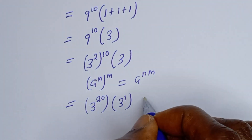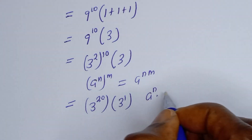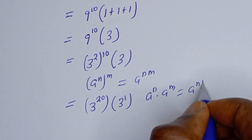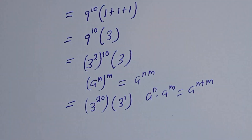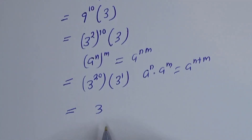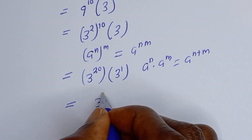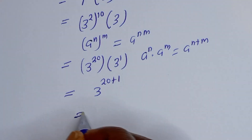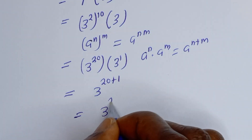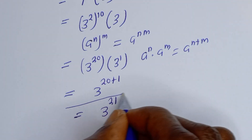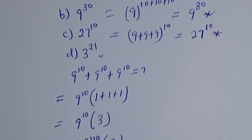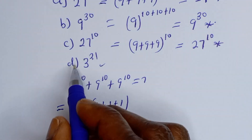Using the rule that a raised to the power n multiplied by a raised to the power m equals a raised to the power n plus m, we get 3 to the power of 20 plus 1, which equals 3 to the power of 21. This is the final answer, and therefore our correct answer is option D.